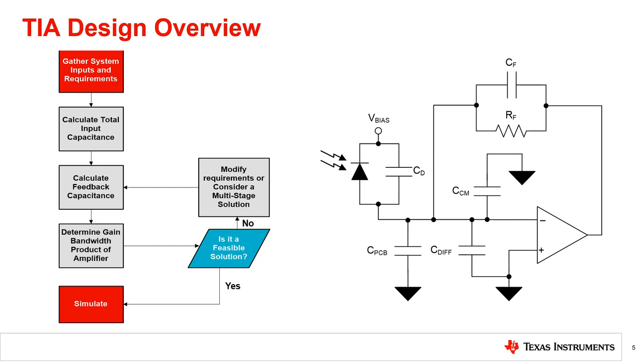In some situations, the resulting gain bandwidth might be too large for a feasible solution, given the gain bandwidth limitations of real amplifiers. In this case, it is appropriate to instead consider other options such as decreasing the input capacitance or decreasing the system bandwidth.